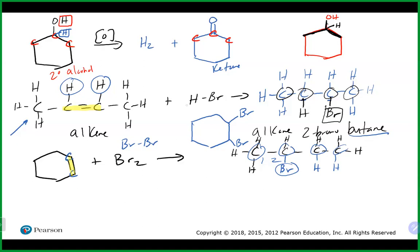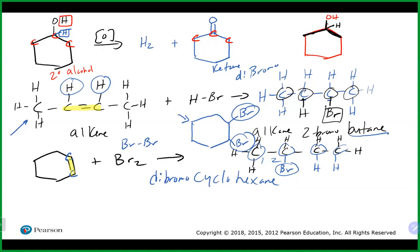The resulting compound would be called dibromo cyclohexane — the ring is now cyclohexane since it's single-bonded, and both groups are bromo groups. Since there are two of them it is a dibromo. We do need to give numbers: the two bromines are on adjacent carbons, so this is 1,2-dibromocyclohexane.